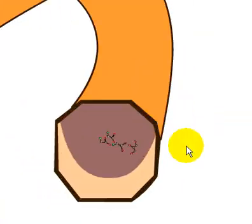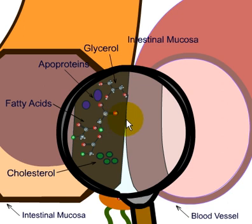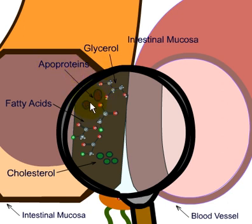These fatty acids and glycerols move down the intestine and from there need to be absorbed into the circulation. The triglycerides are then packed with apoproteins — you can see the apoproteins here — to be transported into the blood.